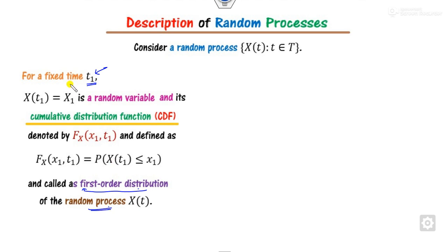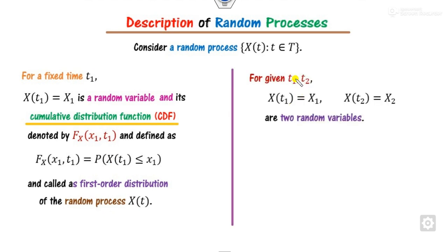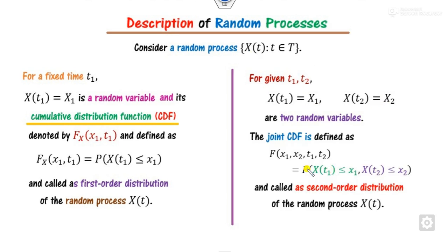If we consider two times t₁ and t₂, the corresponding random processes X(t₁) and X(t₂) are two random variables X₁ and X₂. Corresponding to these two random variables, we define the joint CDF, called the second-order distribution, also called the joint PDF or joint density function of the two random variables.